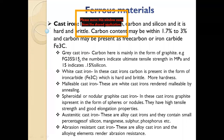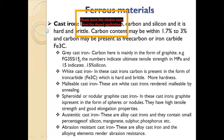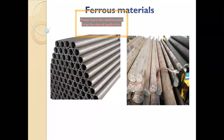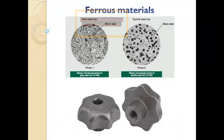White cast iron has carbon in the form of iron carbide. Malleable cast iron can be easily worked. There is also spherical or nodular graphite cast iron, austenitic cast iron, and abrasion-resistant cast iron — used when we need a surface that resists scratches.